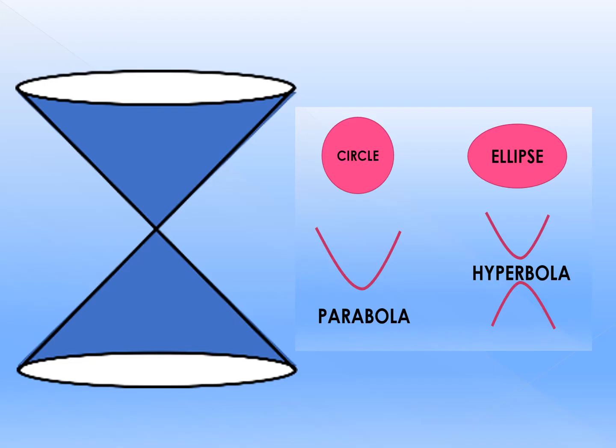For number one, the answer should be a circle. For number two, the answer is ellipse. Number three is parabola. Number four is hyperbola. And number five — you cannot form any type of conic sections because it forms the degenerate cases. Please comment down your score for the first activity.